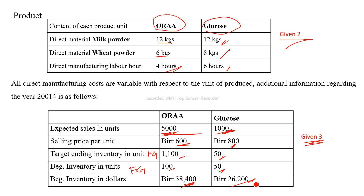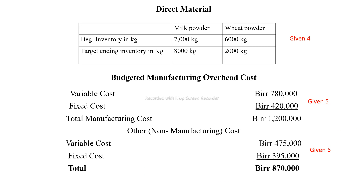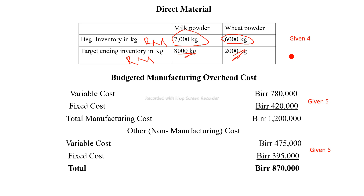This is Given 3. Next is Given 4, which covers the direct material section. The beginning inventory of raw materials includes milk powder at 70 kg and wheat powder at 70 kg.